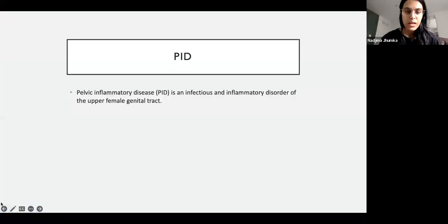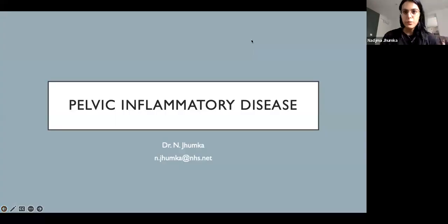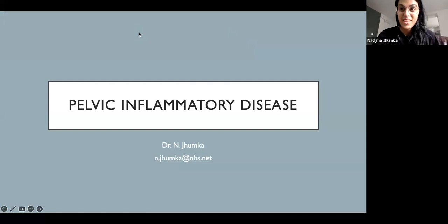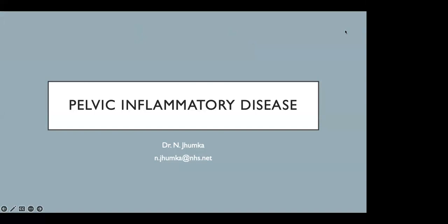Does anyone know what pelvic inflammatory disease is? A student answers: pelvic inflammatory disease is an acute infection in the upper genital tract, which may include the uterus, fallopian tube, and ovaries. A patient with pelvic inflammatory disease has symptoms like lower abdominal pain, cervical tenderness, and others.